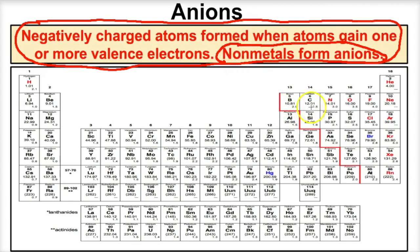What atoms on the periodic table form anions? The nonmetals. Everything to the right of the stair-step line will form anions when they react with metals, with the exception of the noble gases. Noble gases have a valence shell that is completely filled, so they neither lose nor gain electrons. The halogens, when reacting with metals, gain electrons and form one-minus ions — just a minus charge.